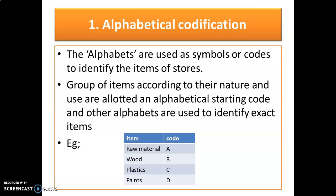The first one is alphabetical codification. From the name itself, the codes are alphabets. Alphabets are used as symbols or codes to identify the items of stores. Groups of items according to their nature and use are allotted an alphabetical starting code, and other alphabets are used to identify the exact item. For example, raw material has code A, wood B, plastic C, and paints are identified by code D.